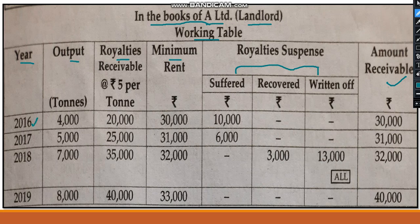In 2016, royalty is 20,000 and minimum rent is 30,000. Royalty is less than minimum rent, so this is case number one. There will be three entries in 2016. In 2017, royalty is 25,000 — again it is less than minimum rent. So the entries in 2017 will also be case number one — three entries.